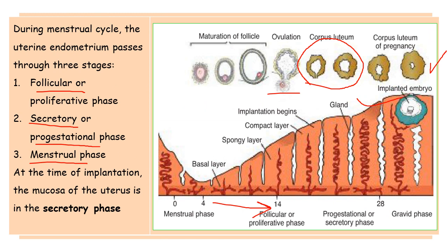From puberty until menopause, the uterine endometrium undergoes changes in a cycle of approximately 28 days under hormonal control by the ovaries. During this menstrual cycle, the uterine endometrium passes through three stages: the follicular or proliferative phase, the secretory or progesterone/progestational phase, and the menstruation phase. The proliferative phase begins at the end of the menstrual phase under the influence of estrogen and parallels growth of the ovarian follicle.